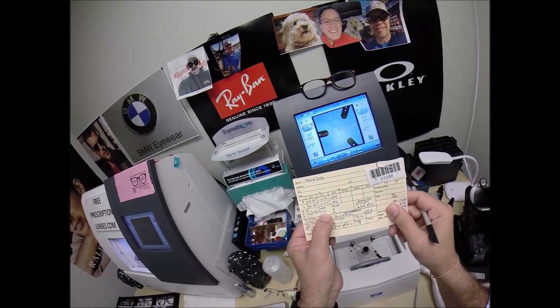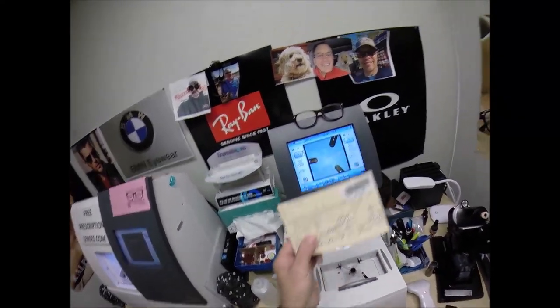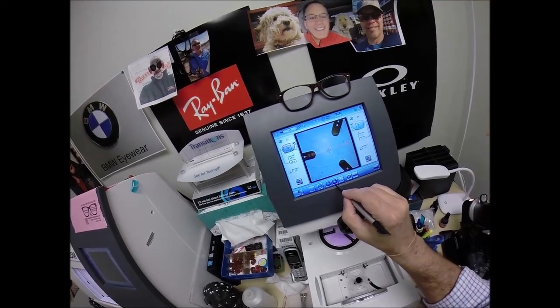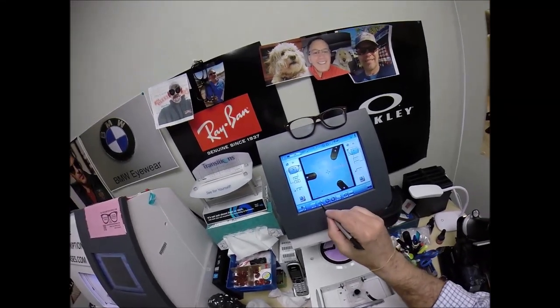I want to raise the optical center height, the height of the seg height, the invisible bifocal, to 19. Again, I tap this plus button. It goes up in half-millimeter increments until we get to 19.